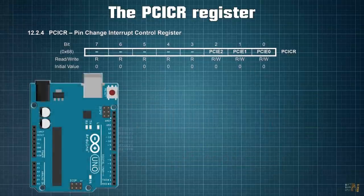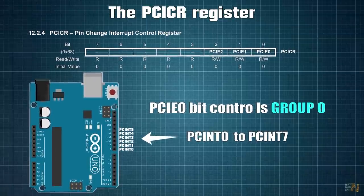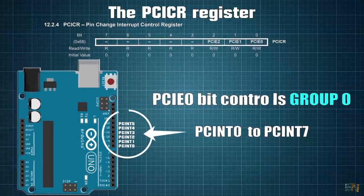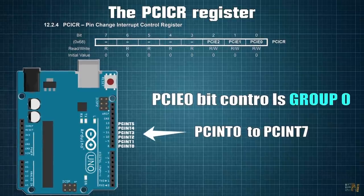PCIE0 controls the group of pins from PCINT0 to PCINT7. If we take another look at the Arduino port map, we can see that those interruption pins are connected to the digital pins from D8 to D13, which are bits 0 to 5 from port B.